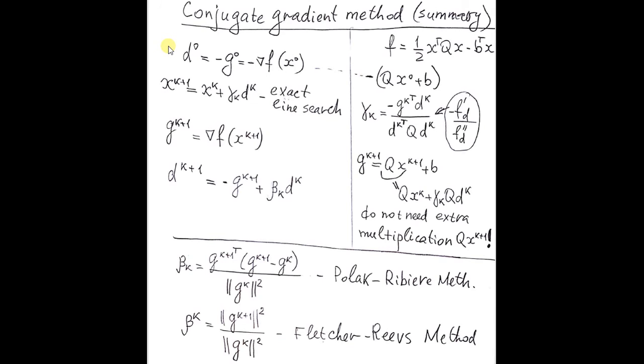And interestingly it is practical to do it so. So you just do real exact line search instead of doing it analytically as you do for quadratic functions. And Polak-Ribiere formula in practice looks more robust and efficient than other formulas for updating directions of conjugate gradients.